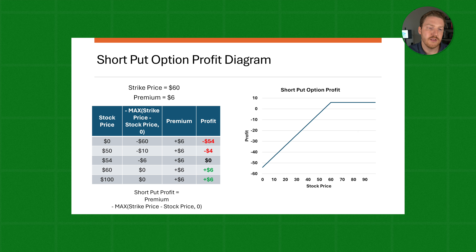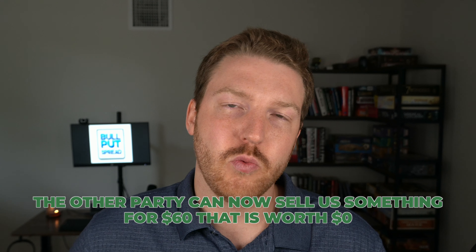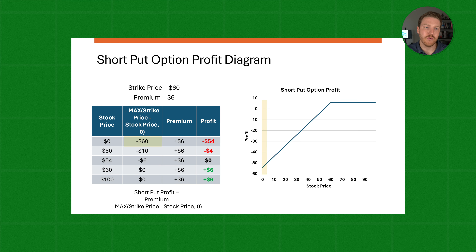To take on that risk, the other party is going to have to pay us a premium. So we're going to receive a $6 premium up front to take on this risk. We can see in this table the various profits or losses we might incur based on the end result of the stock price. The worst possible outcome for us is if the stock actually ends up at $0 — the other party can then sell us something for $60 that is worthless, which is a $60 loss for us. However, they did pay us that $6 premium up front, and therefore our total profit is going to be a loss of $54.